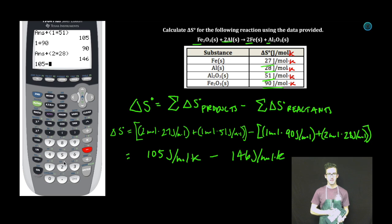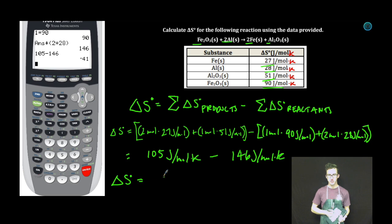Quick subtraction. 105 minus 146. The entropy change for this reaction is equal to negative 41 joules per mole Kelvin.